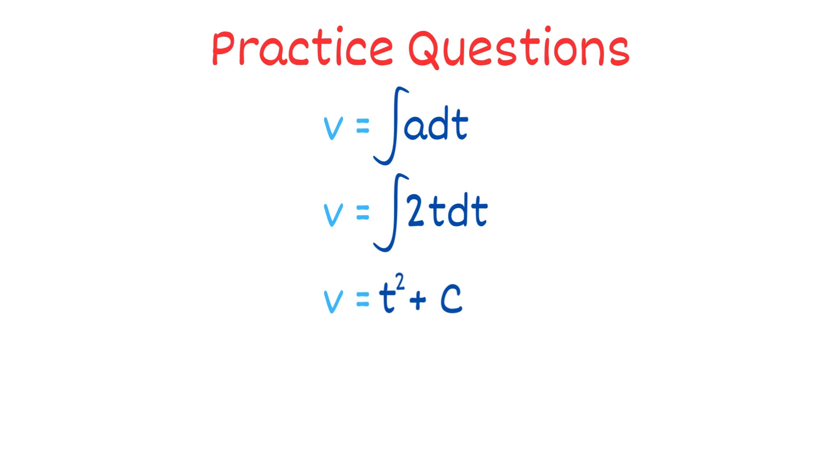We are given that the car starts from rest. So, v = 0 when t = 0. Hence, we can say in our equation, constant c = 0. Now, we can find the distance traveled.